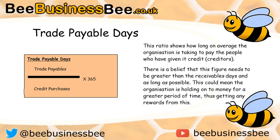The opposite of trade receivable days is trade payable days. This formula works out how long on average it takes an organization to pay the people who have given it credit — the suppliers, sometimes known as creditors. It is calculated using trade payables divided by credit purchases, times 365, to work out the result in days.